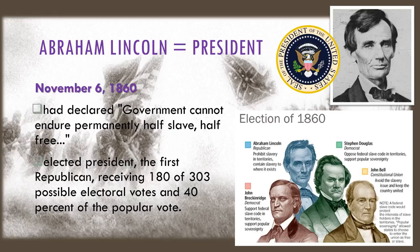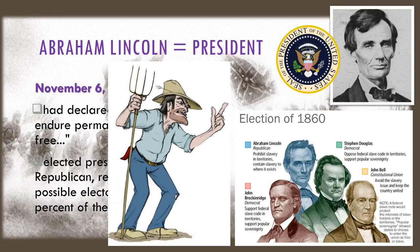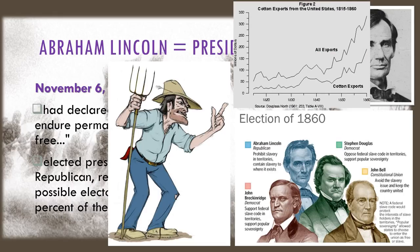Abraham Lincoln was voted in as President of the United States in the election on November 6, 1860. During his campaign Lincoln had declared that government cannot endure permanently half slave half free, referencing that he did not support the southern states having slaves. This did not settle well with southerners. They were outraged because they relied on cheap labor to grow their crops and sustain the economy in the South. If these southerners no longer had slaves they knew that they would be unable to be successful financially and would lose an entire lifestyle they had grown to rely on.